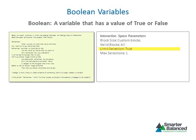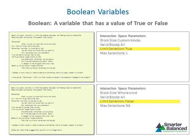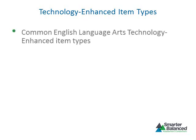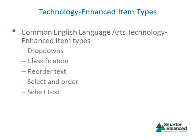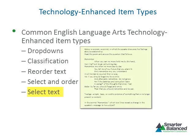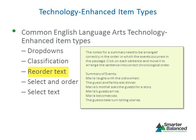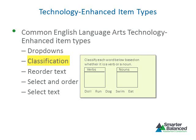For example, the select text item type allows the item writer to indicate whether there is a limit to the number of selections a student can make. Boolean variables are used to turn a feature on or off and allow production of a wider variety of items from a given technology-enhanced item type. Most ELA items will use one of the following types: drop-downs, classification, reorder text, select and order, and select text. The TEI poem item discussed earlier is an example of a select text item. The item asking students to order events in a story is an example of a reorder text item, and the item asking students to classify words as verbs or nouns is an example of a classification item.